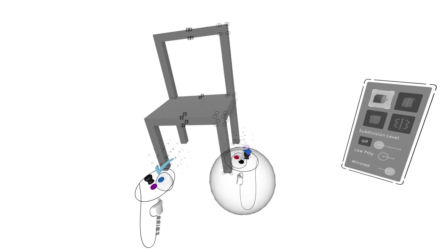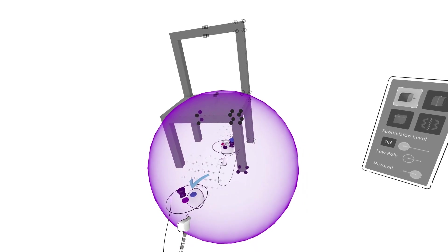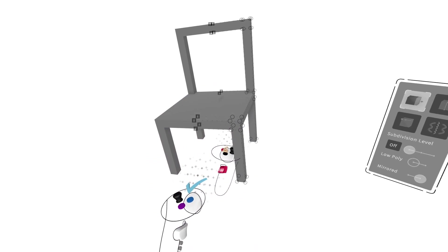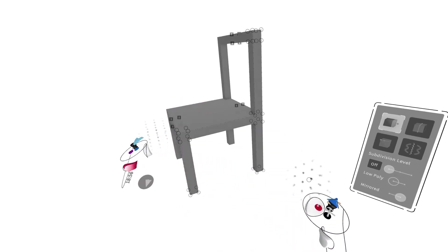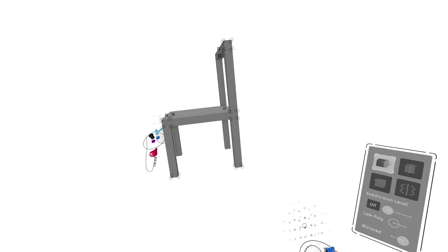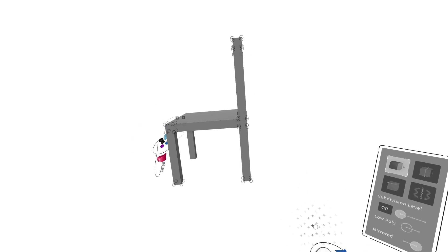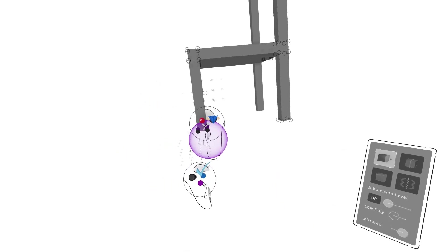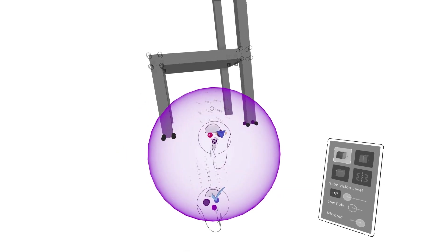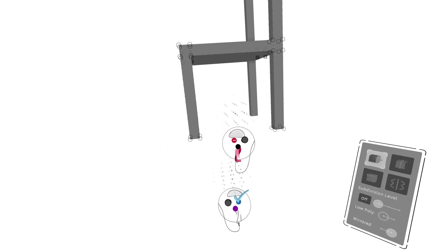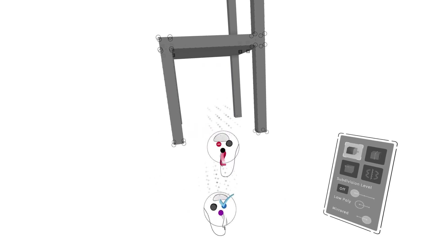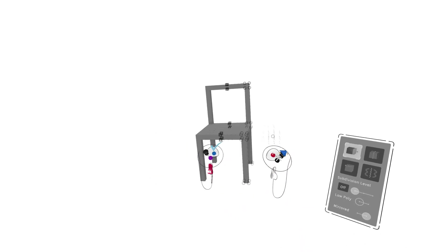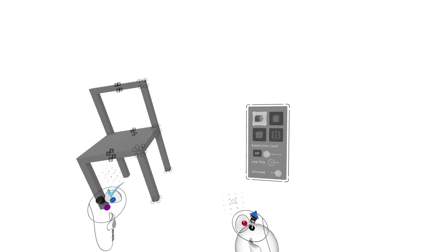We can see it's kind of boxy, so we're going to want to bring that out a little bit. Let's go ahead and pull that forward — it gives the chair a bit more depth. We'll just play with proportions a bit and pull the legs down a little bit. It looks about right.